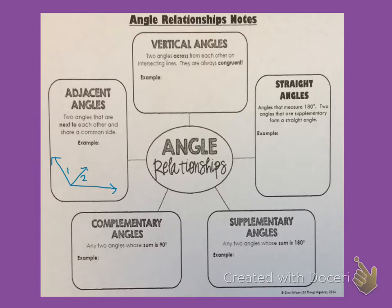Vertical angles are two angles across from each other on intersecting lines. They are always congruent, which means their measures are equal. This pair of angles that I've drawn are vertical angles because they are across from each other and their measures are equal, which means they are congruent.